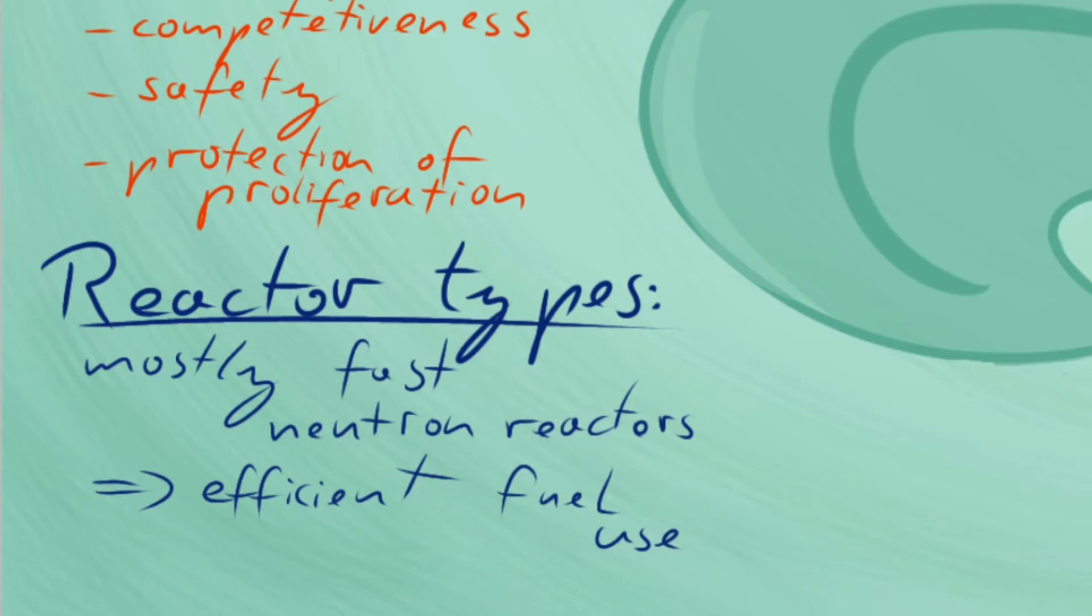This is especially important when trying to break down plutonium and other actinides, allowing for an overall more efficient use of the energy potential in the fuel.